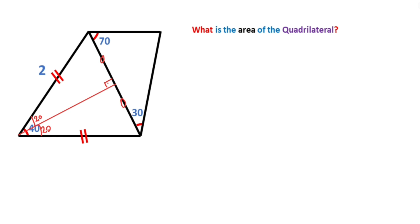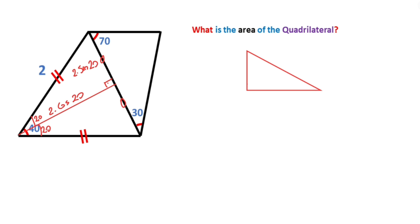So this part must be equal to 2·sin20, and this part must be equal to 2·cos20. As a reminder, in a right triangle with hypotenuse x and angle alpha, the opposite side equals x·sin(alpha) and the adjacent side equals x·cos(alpha).